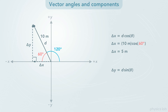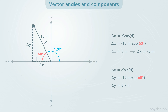This gives us the length of a side of the triangle. But now we need to realize that the x component is pointing to the left, in the negative x direction. So we have to change the x component to negative 5 meters. The y component is d times the sine of 60 degrees, which gives us 8.7 meters. It's pointing in the positive y direction, so we leave delta y as positive. We'll see why it's important to keep track of positive and negative components when we learn how to add vectors.